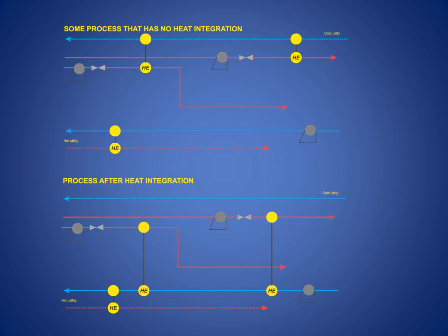This is an example of what we are going to do with Pinch Technology. The first figure represents a process plant before heat integration, and the second figure shows what we did with process integration. We don't need the same heat energy as before, because we make a heat exchanger network to reuse energy that is present in the production plant.